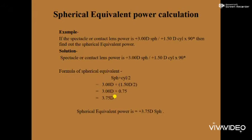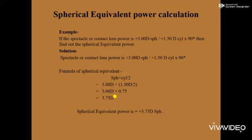Another example: if the spectacle or contact lens power is plus three diopter spherical / plus 1.50 diopter cylinder × 90°, find the spherical equivalent power. Using the formula — spherical plus half of the cylinder — the spherical power is plus three and the cylinder power is plus 1.50 diopter. After calculating, the spherical equivalent power is plus 3.75 diopter. Always remember to use the correct plus or minus sign when calculating, as prescribed. Hope you all have understood the spherical equivalent power calculation. Thank you.